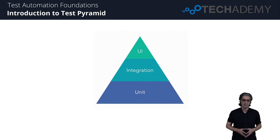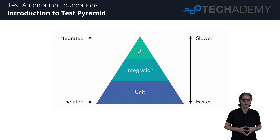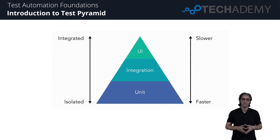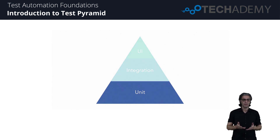These test types are the usual suspects on software projects. At a minimum, we recommend that projects have at least these three types of automated tests, but can have additional types as well. Tests at the base of the pyramid are the fastest running. As you move up the pyramid, tests become slower. Similarly, tests at the base are the most isolated, and as we move up, they become more involved and more integrated with different services.